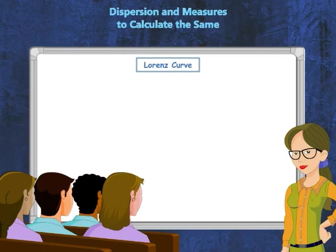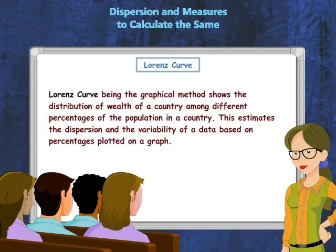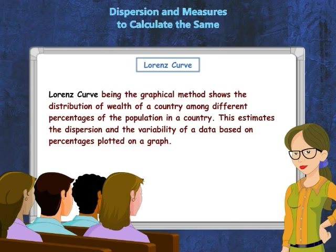In a nutshell, there are two main methods of measuring dispersion: numerical and graphical. The Lorenz Curve, being the graphical method, shows the distribution of wealth of a country among different percentages of the population, estimating the dispersion and variability of data based on percentages plotted on a graph.